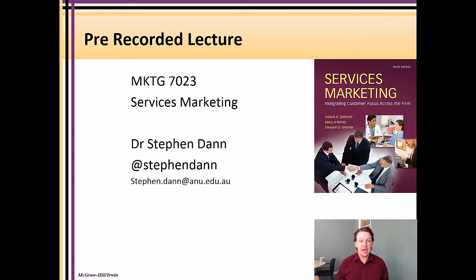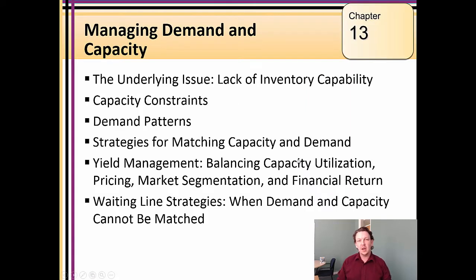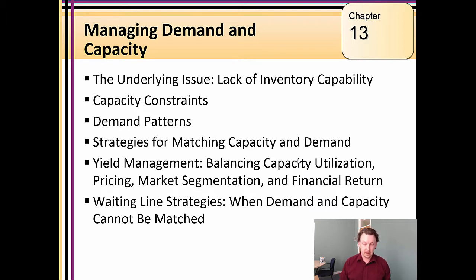Welcome to chapter 13. This is the chapter where we start talking about distribution in terms of demand and capacity. As a services marketer, one of the things you'll come across is a fair amount of adaptation of economic theory. In this chapter, there are a lot of options to break out the supply and demand curves, talk about elasticity, and work through some of the maths and economics.